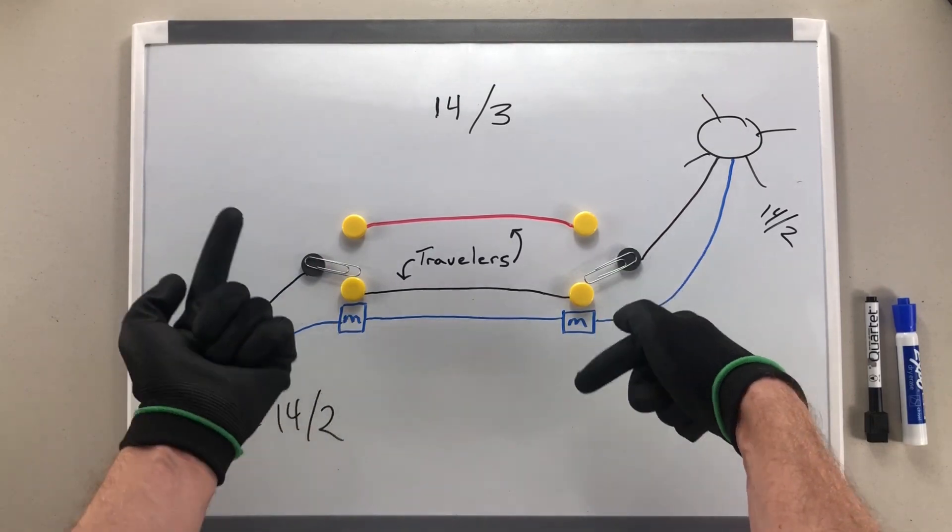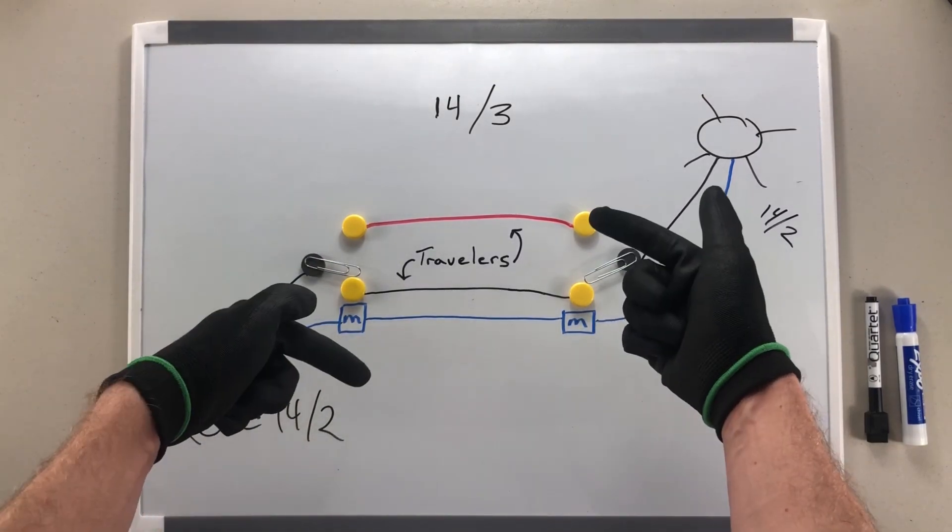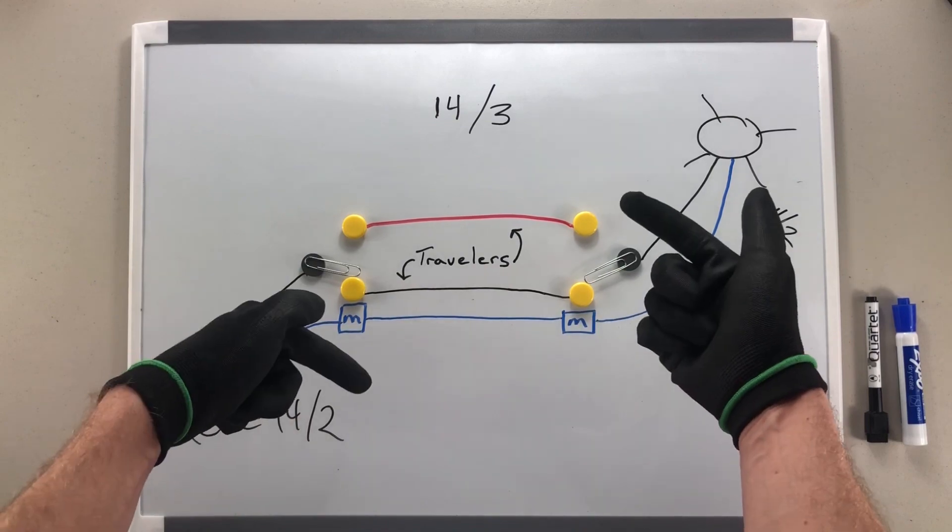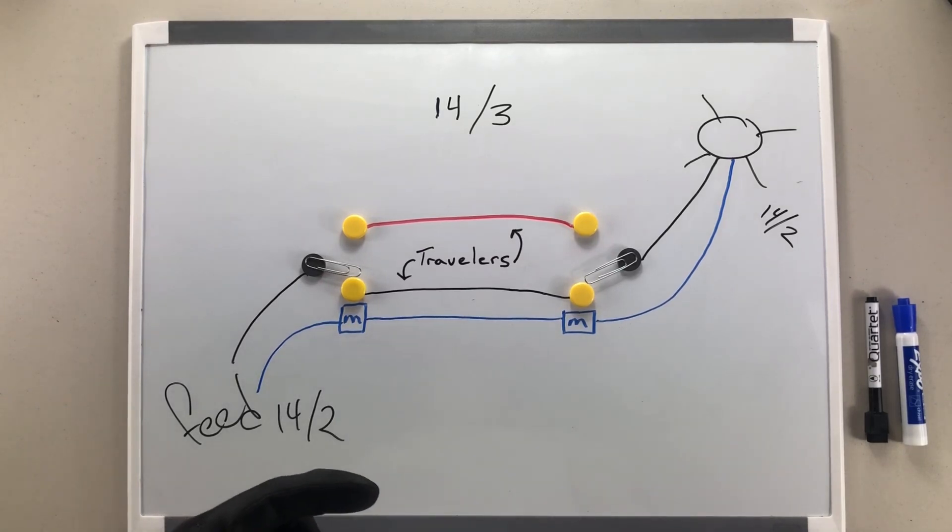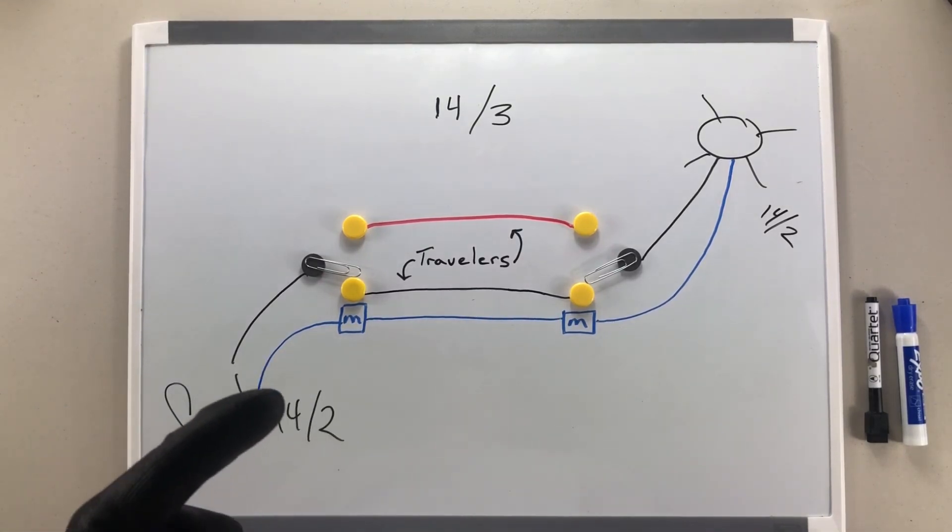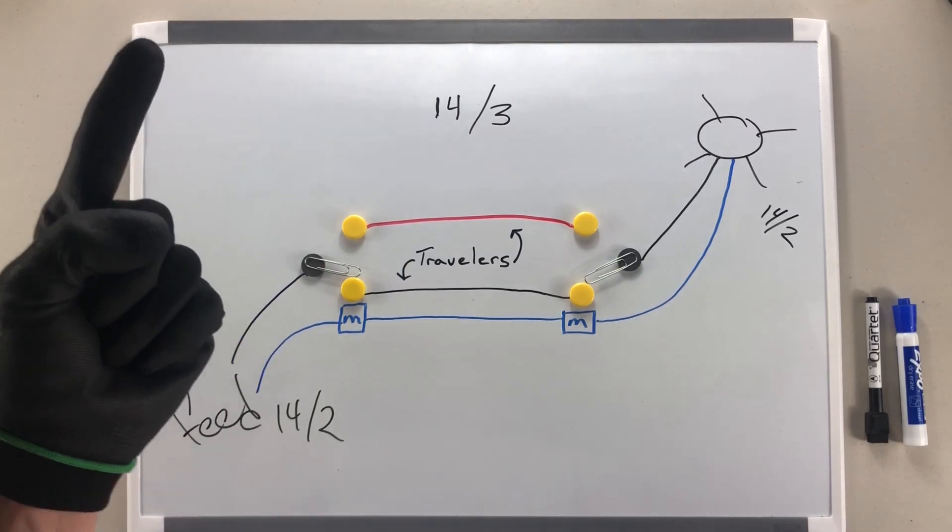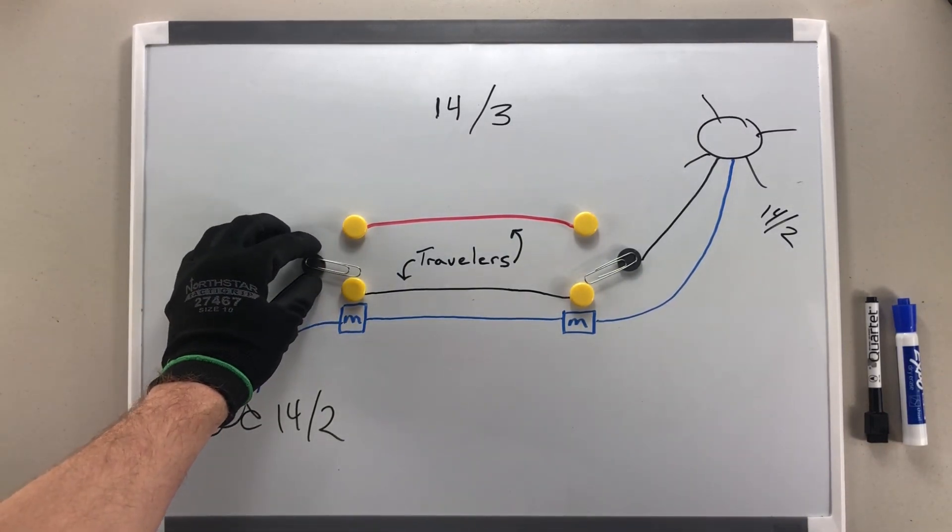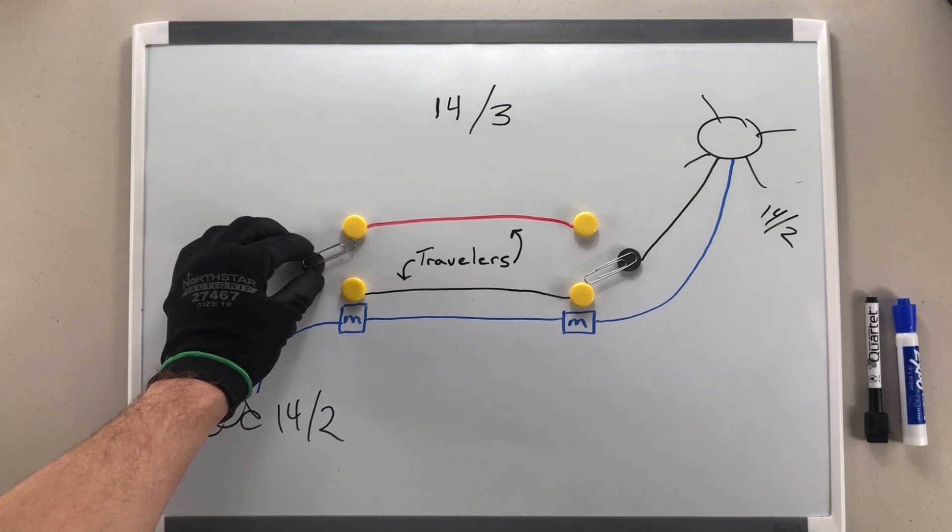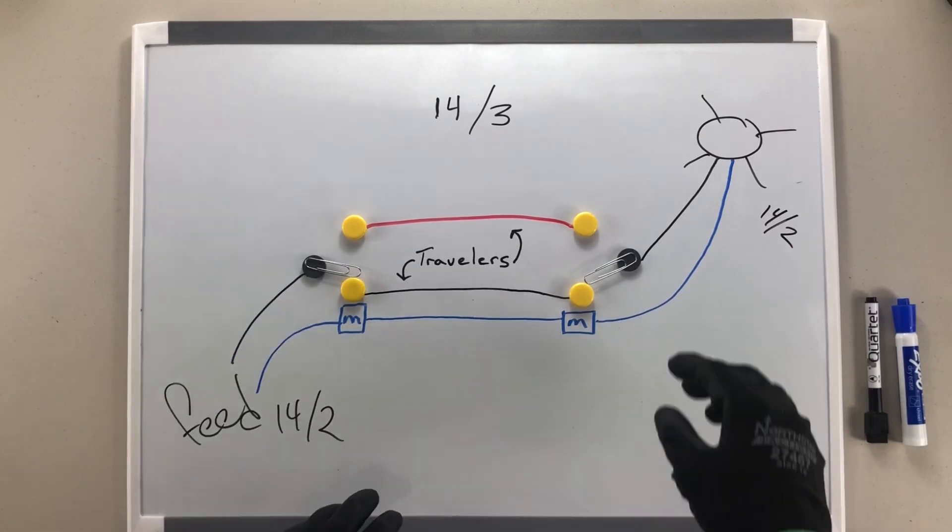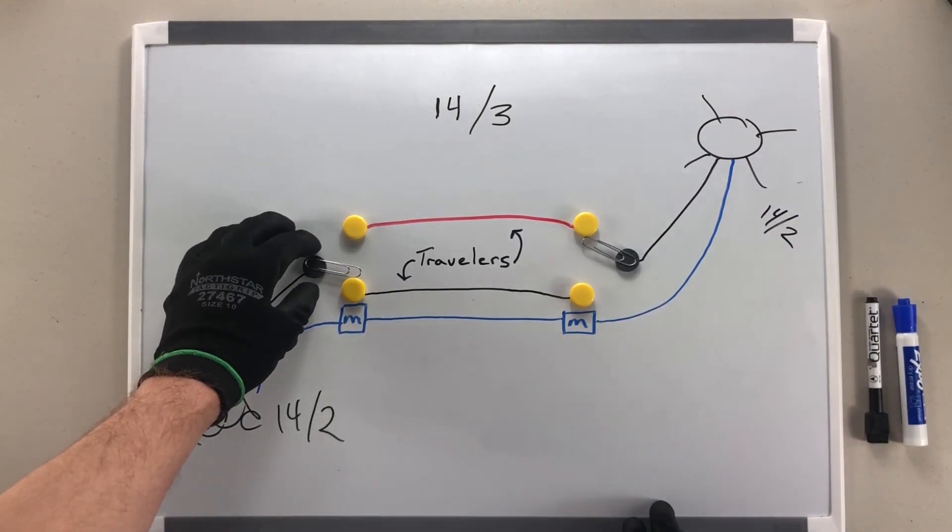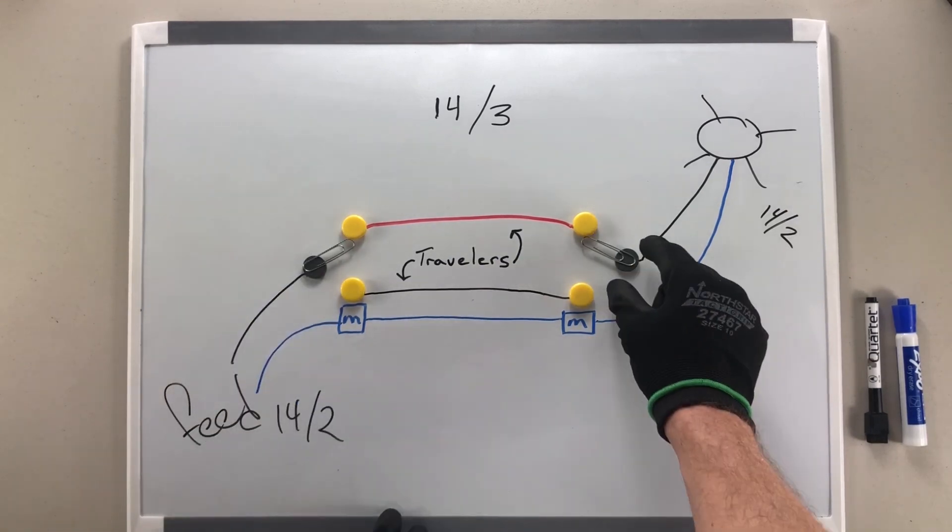Anytime we hit one of these, it will change the condition, being able to turn it on and off from either location. This would be very common, maybe in a stairwell, or in a large dining room where you have two entrances. Unlike simple single-pole switches that have an on or an off, this only has this traveler connection or that traveler connection. There's no such thing as floating in the middle here. You're either here or here, which is why no matter which one of these switches you turn, you'll always have an on or an off condition.